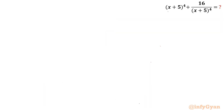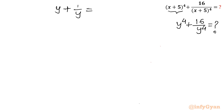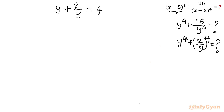We know y + 2/y = 4, and we need to find y⁴ + 16/y⁴, which is the same as y⁴ + (2/y)⁴. Let a = y and b = 2/y. Then a + b = 4, and a·b = y · (2/y) = 2. So we have the system: a + b = 4 and ab = 2, and we need to find a⁴ + b⁴.